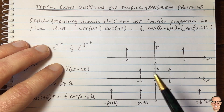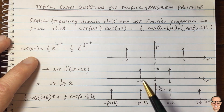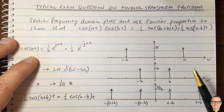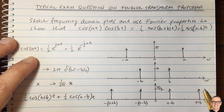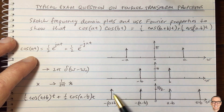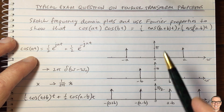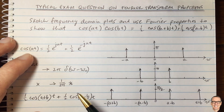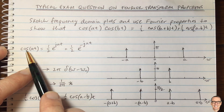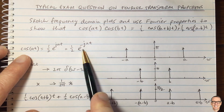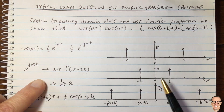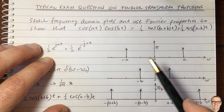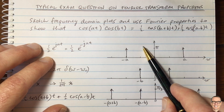This is a typical exam question because professors like to see that you can do mathematics but also demonstrate understanding. Here we've used the properties of linearity, convolving with a delta function, and representing cosine in terms of complex exponentials — making this a good testing question on an exam.